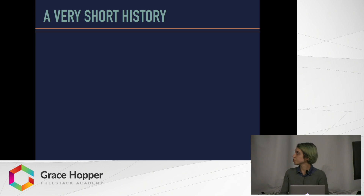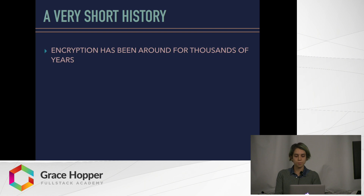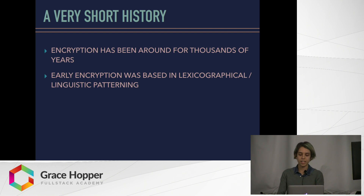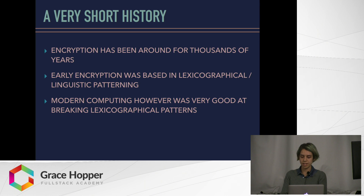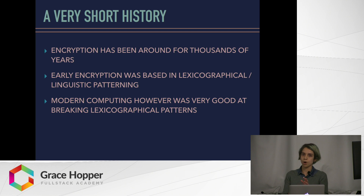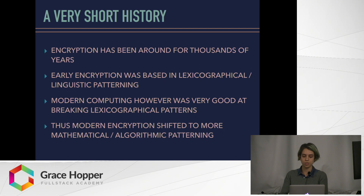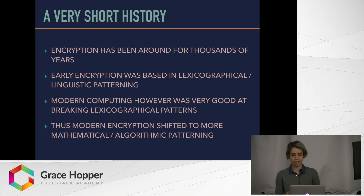Let me give you a very short history of encryption. Encryption has been around for thousands of years. Early encryption was based in lexicographical or linguistic patterning. However, with the advent of modern computing, we realized that computers were really good at breaking these linguistic patterns. So in around the 1930s, modern encryption switched over to be much more mathematical and algorithmic.